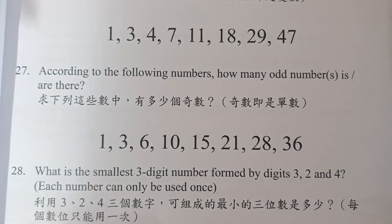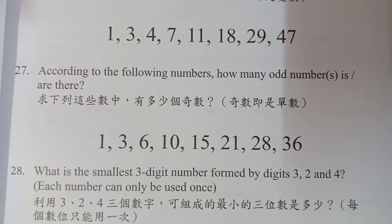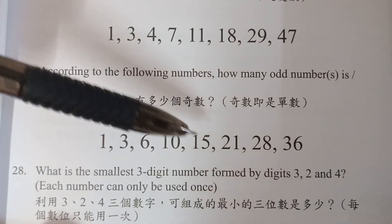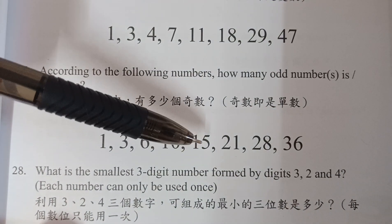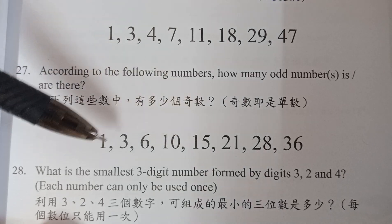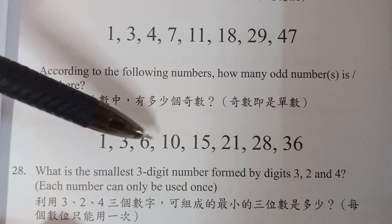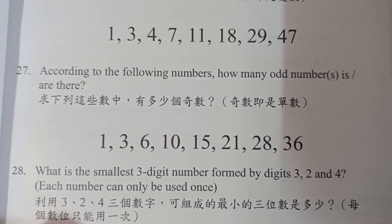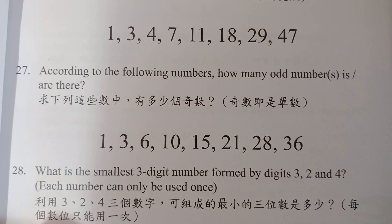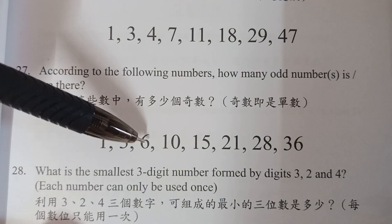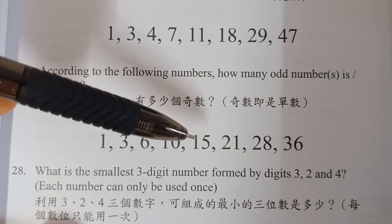Number twenty-seven: according to the following numbers, how many odd numbers are there? The odd numbers are 1, 3, 15, and 21. There are four odd numbers.